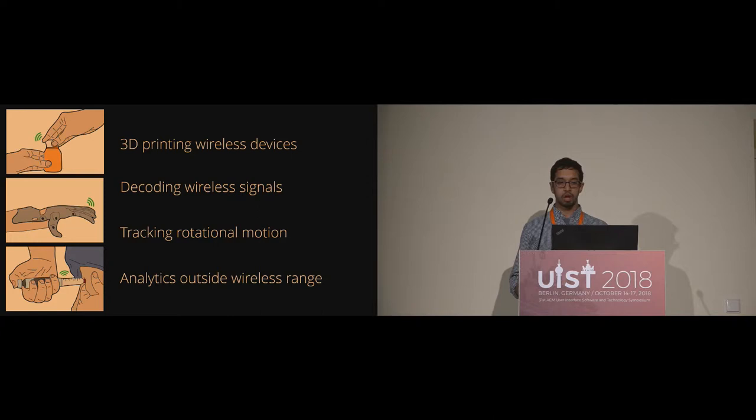To give you an overview, I'm going to start by explaining how we build these 3D printed objects and how they can communicate. Second, I'll talk about how we can decode the data that we receive from them and use that to track motion. And last, I'll talk about how we can actually store information within these objects so that we can enable analytics outside of our wireless range.